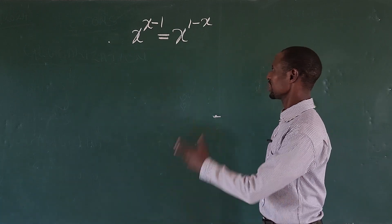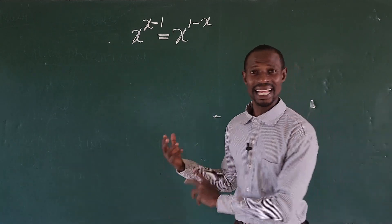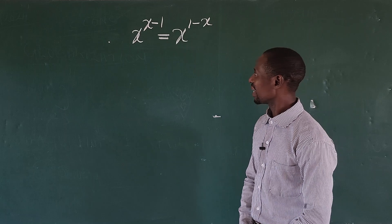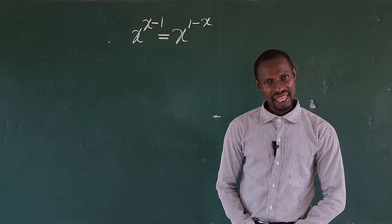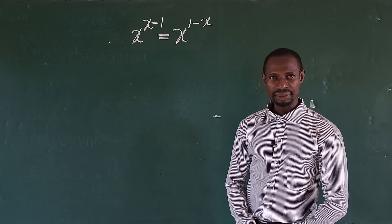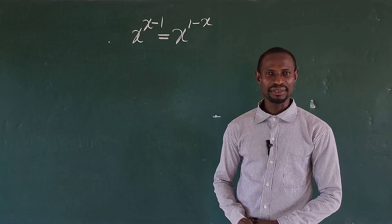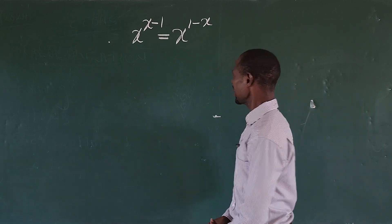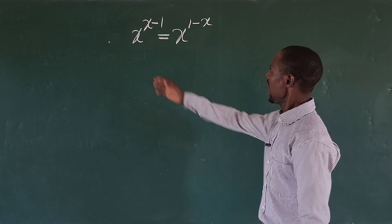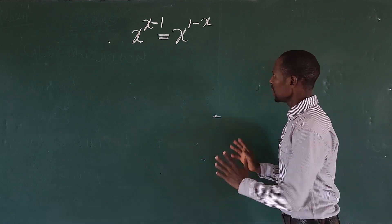Hello, good people, welcome to today's math class. Today we have this nice question before us. If you look at this question, you may think it is simple, but if you're not careful enough, you'll run into some problems. So how do you solve this question: x to the power of x minus 1, less than 2x to the power of 1 minus x?